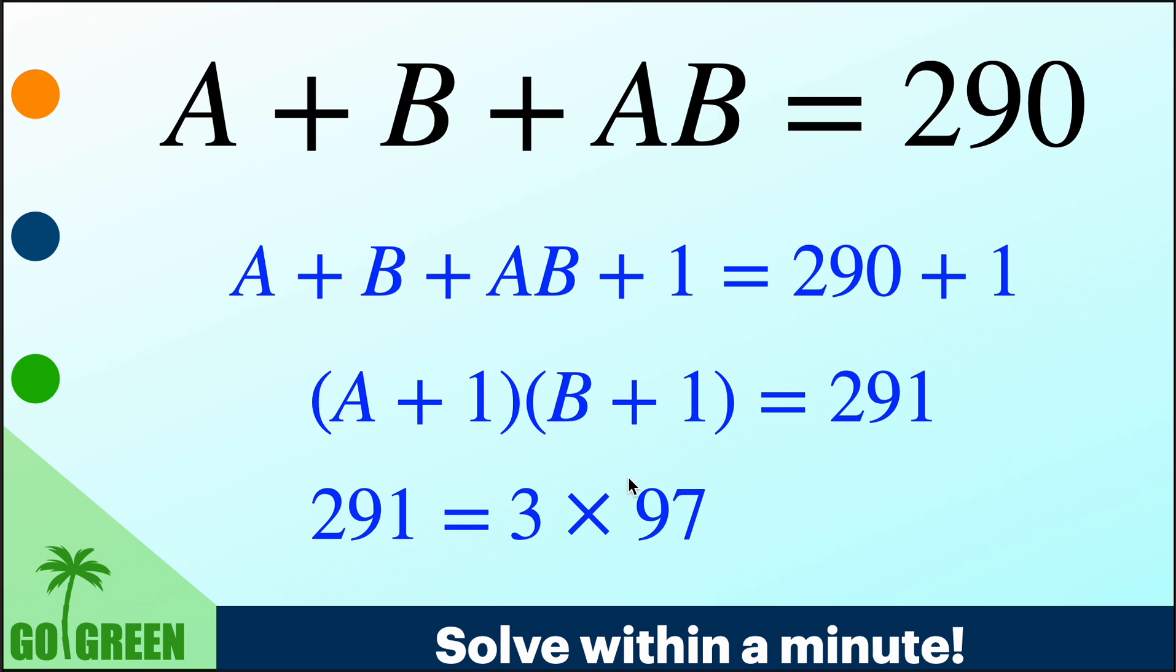Now there is something interesting. So 3 is gone and remaining is 97, but 97 is again a prime and therefore there is no other factors.